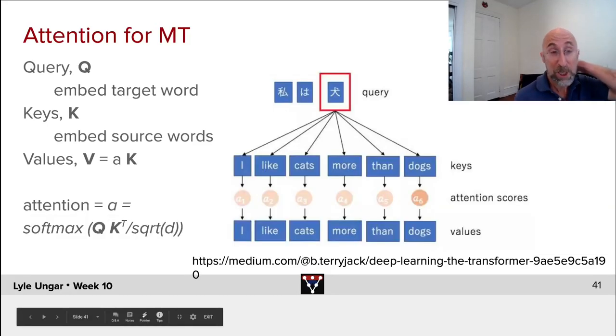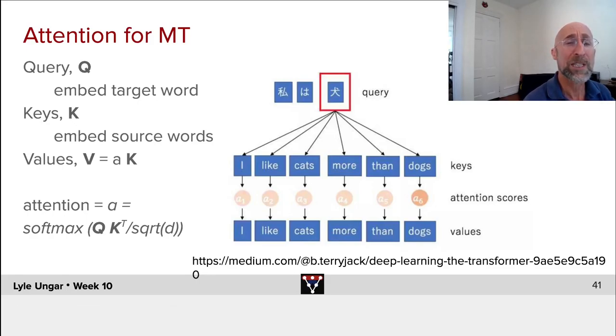So for machine translation what does it look like? The query is the embedding of precisely the hidden layer right before the next thing you're trying to translate to in the target word and the keys are the embeddings of all of the words in the source document or source language. These are done all in parallel, nice, very fast.